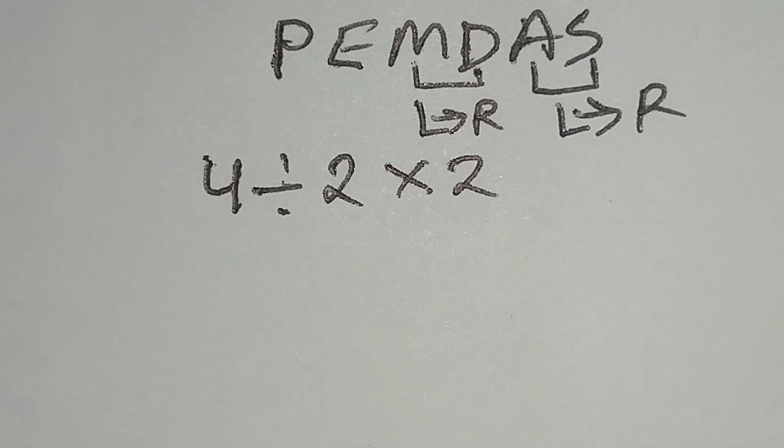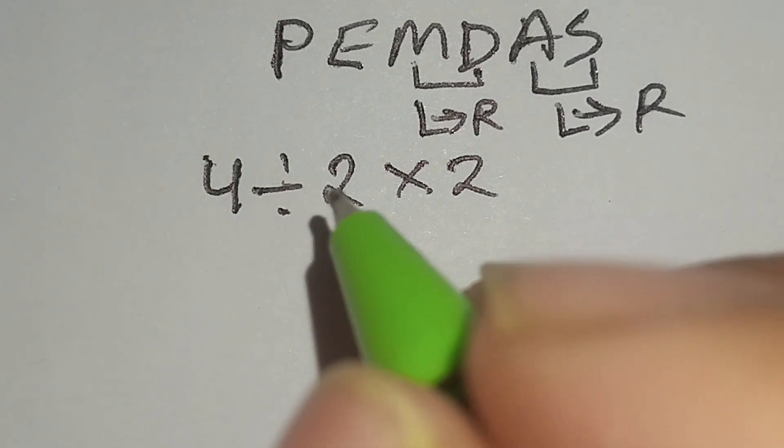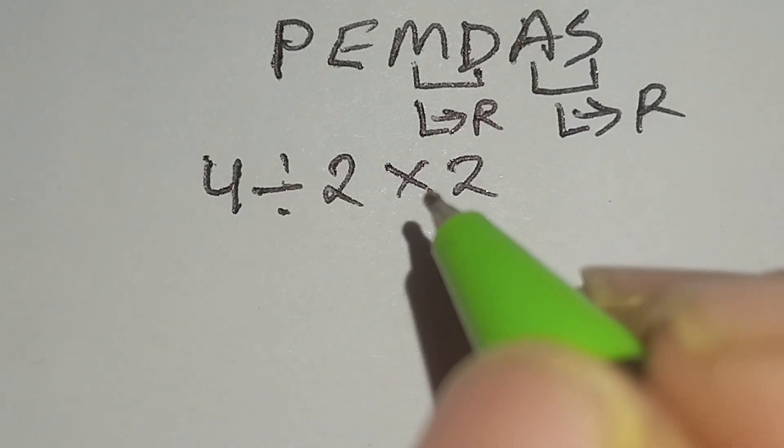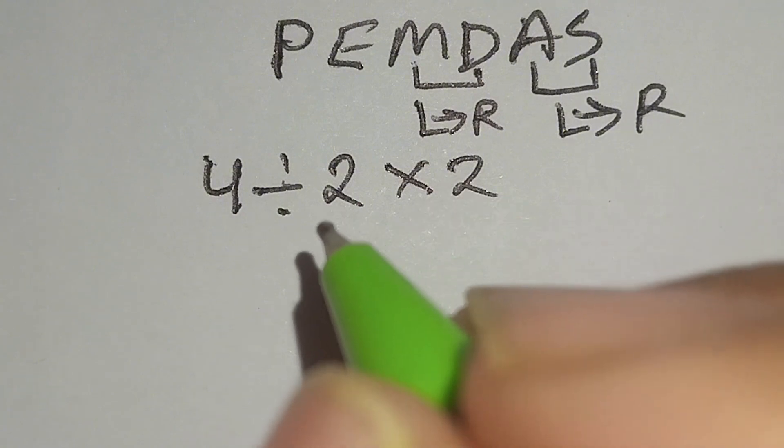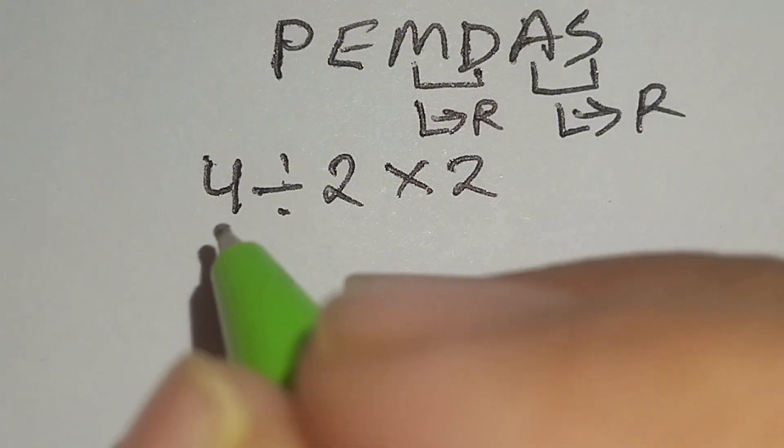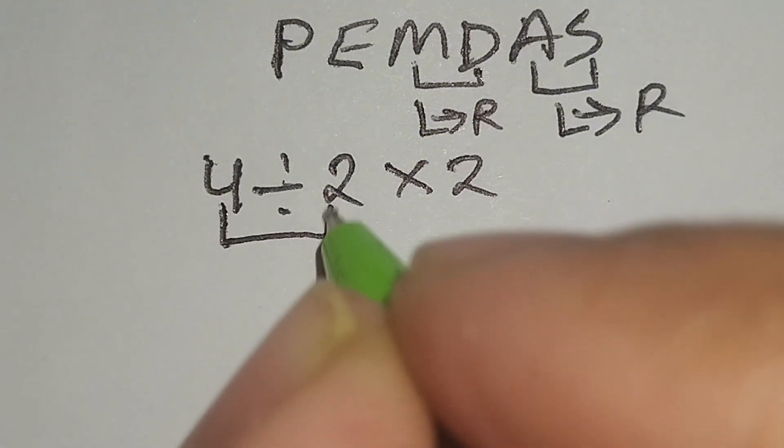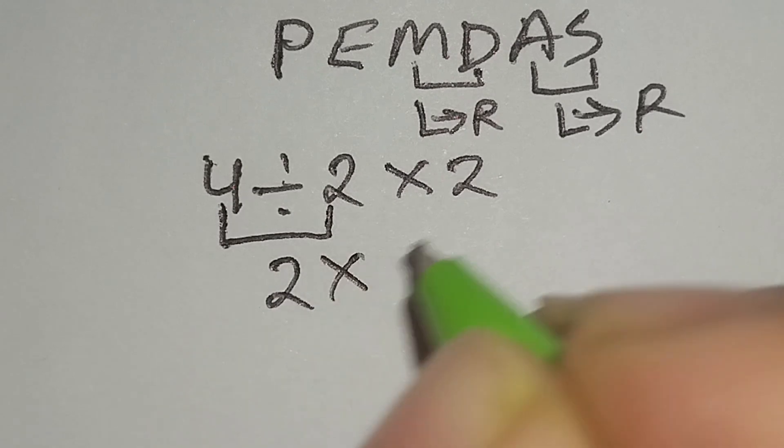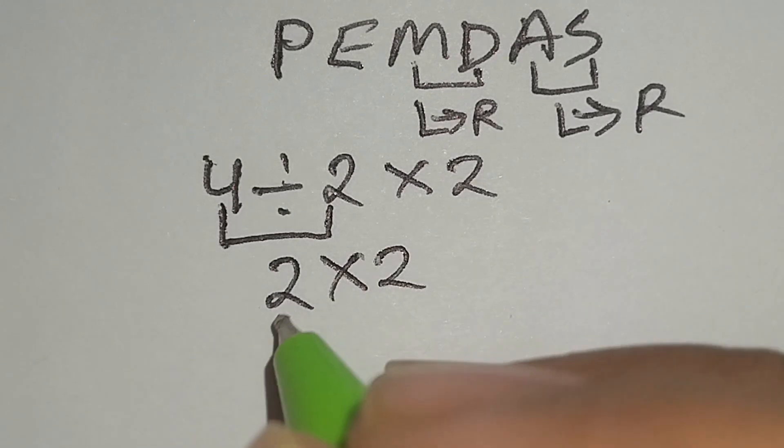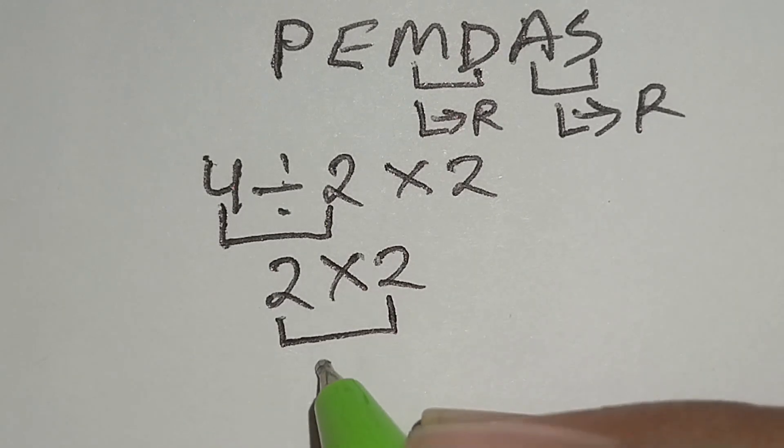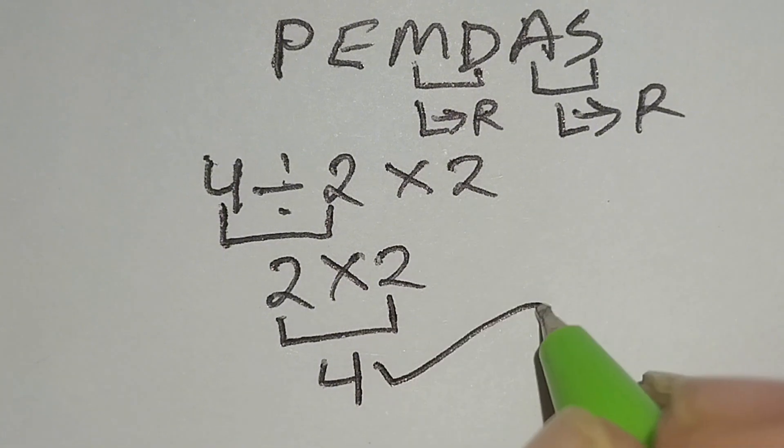According to the order of operations, now I have to work with this division, because multiplication and division have same priority. So we work left to right. Here, 4 divided by 2 gives us 2. Multiply this by 2. 2 times 2 gives us 4, and this is the correct answer.